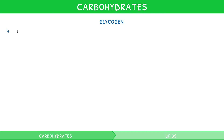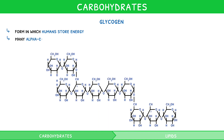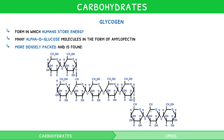Glycogen is the form in which humans store their energy. It is also composed of many alpha-D glucose molecules in the form of amylopectin. It is more densely packed and is found in the liver and muscle.